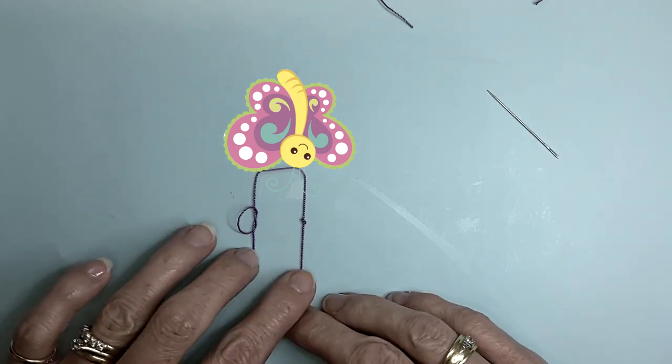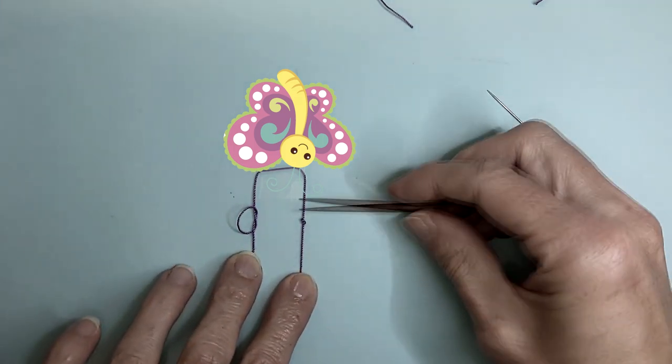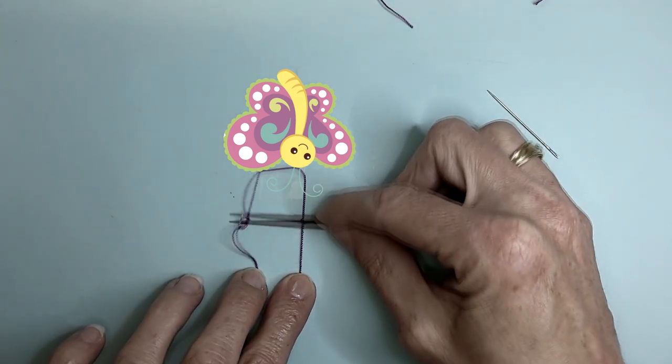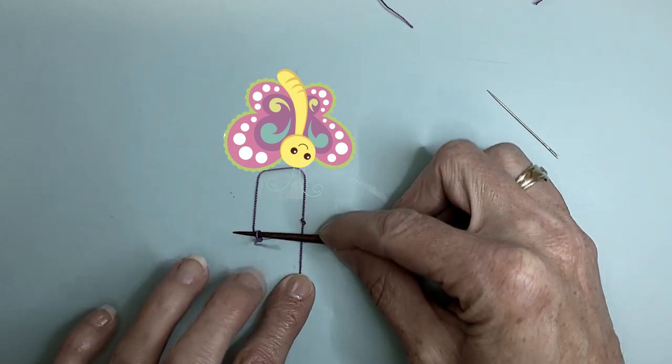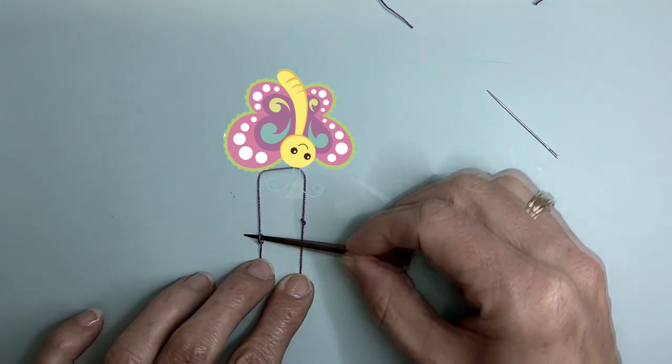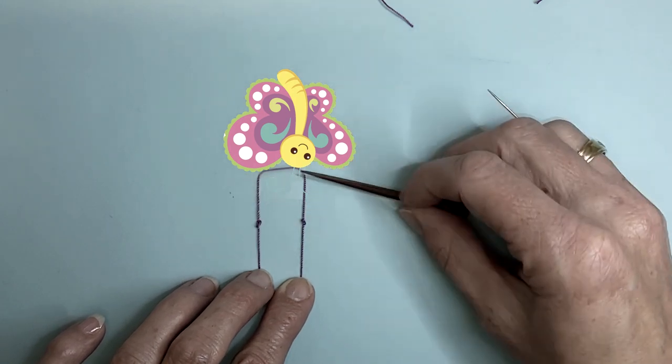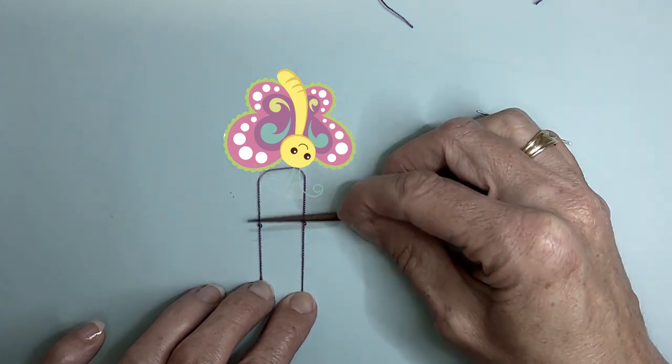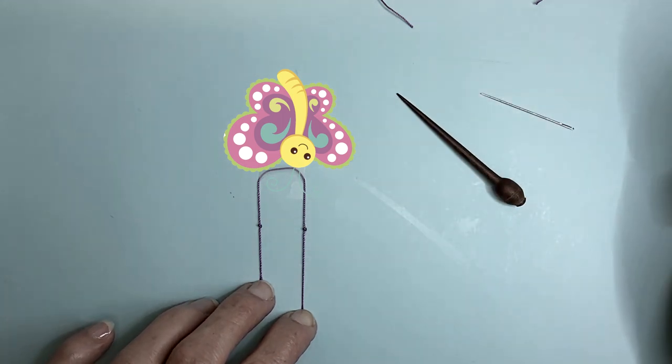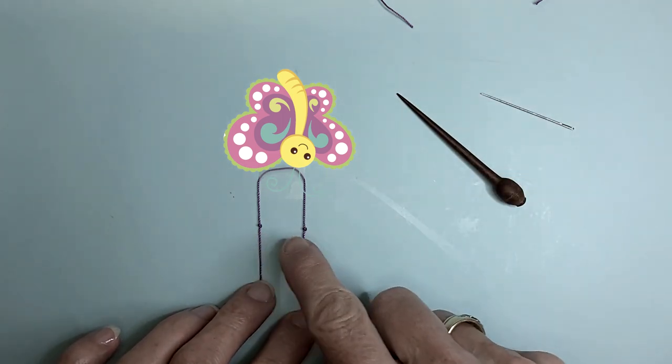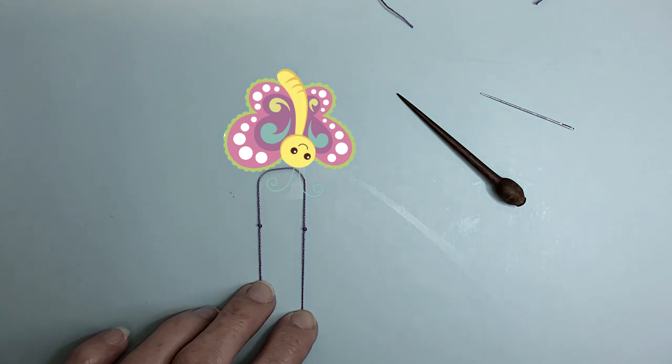Now we can position our knot wherever we want it to be. By doing the same thing with the other side, again our spike allows us to make our antenna knots nice and even.